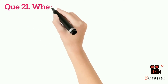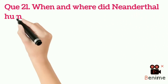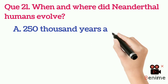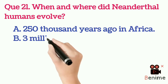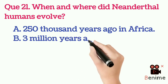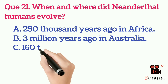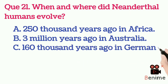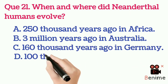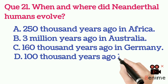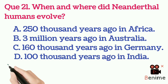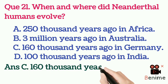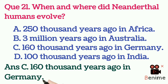Question 21: When and where did Neanderthal humans evolve? A. 250,000 years ago in Africa. B. 3 million years ago in Australia. C. 160,000 years ago in Germany. D. 100,000 years ago in India. Answer C: 160,000 years ago in Germany.